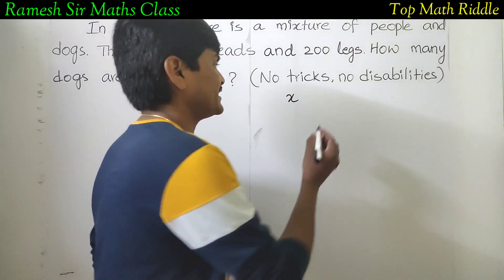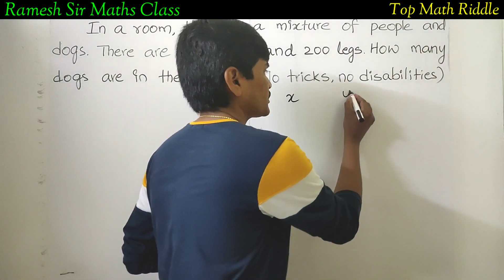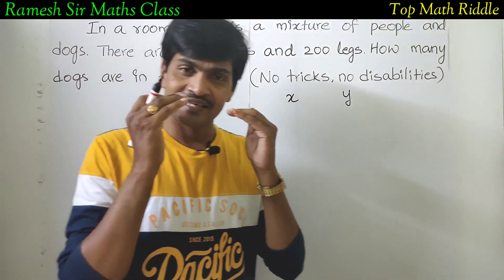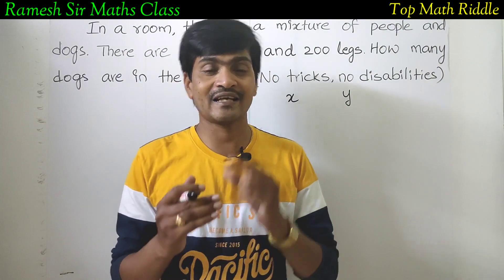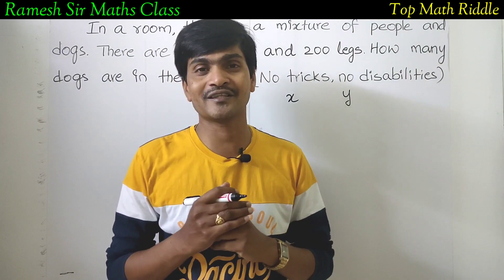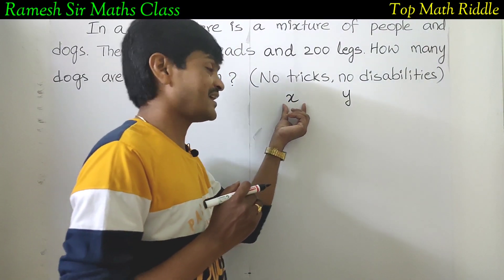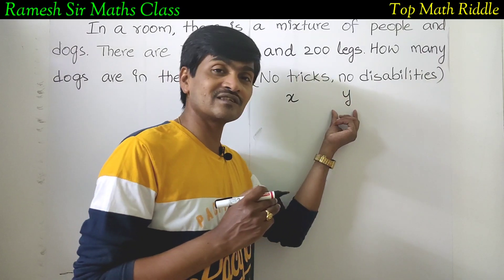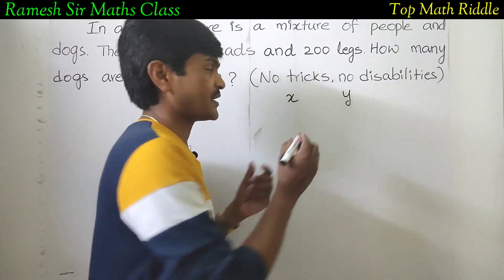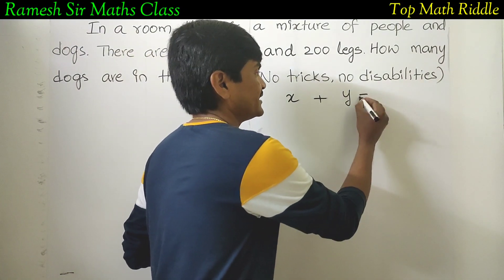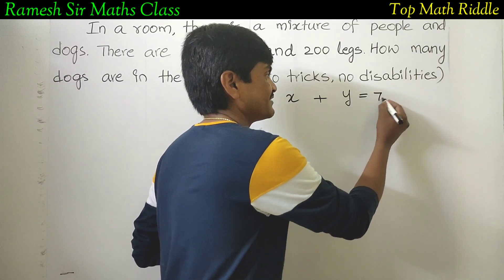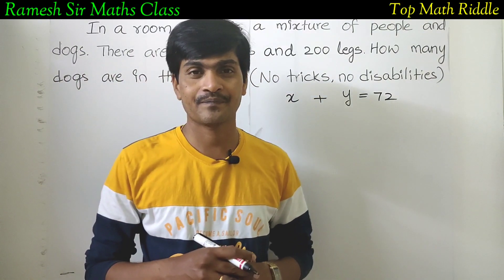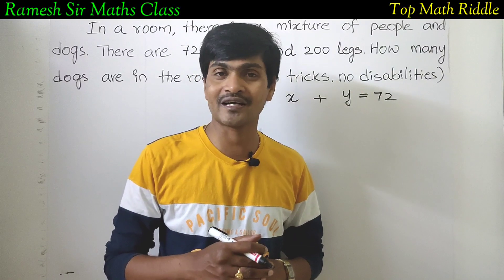Let the number of dogs be y. We are talking about human beings and humans — referring to pupils. The heads of human beings are x, and the dogs are y. The total heads are 72, so x plus y equals 72.